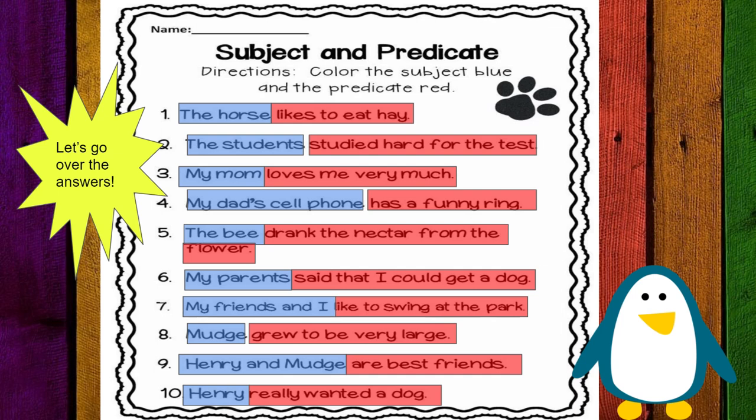Mudge grew to be very large. Mudge is the subject. Grew to be very large is the predicate. Henry and Mudge are best friends.